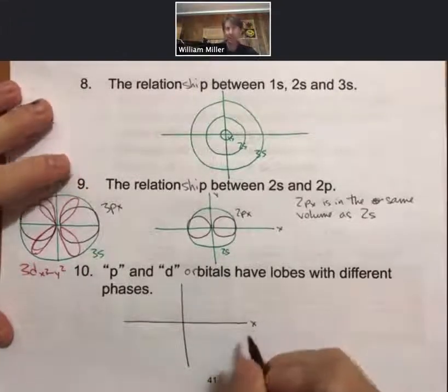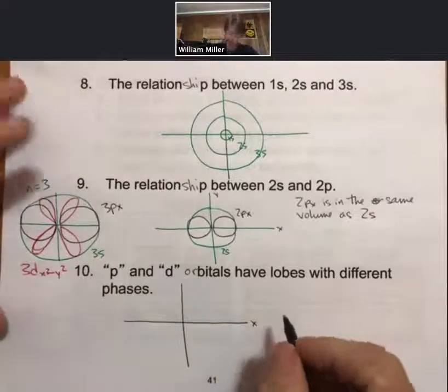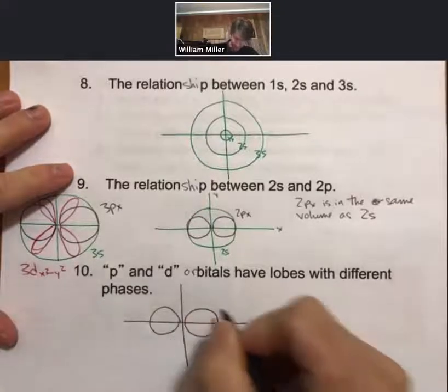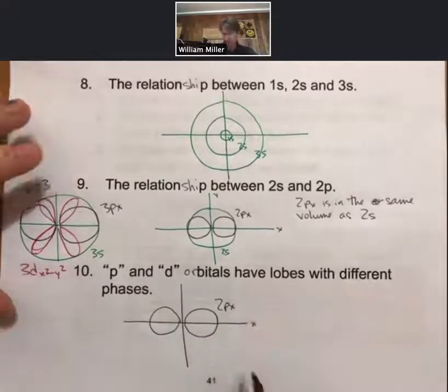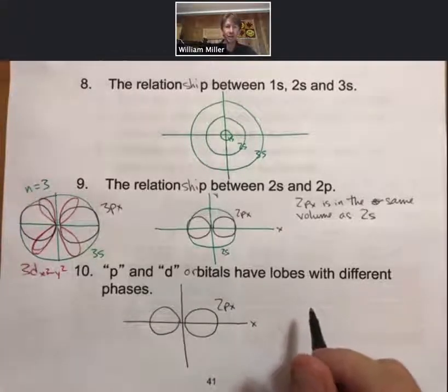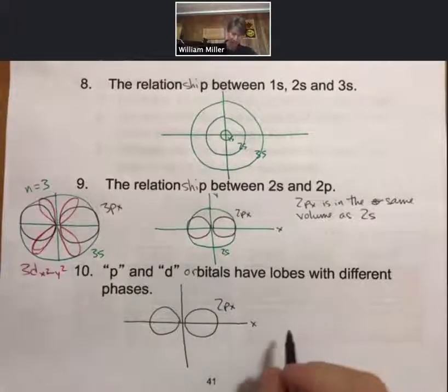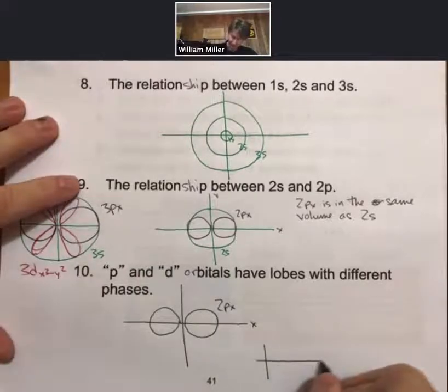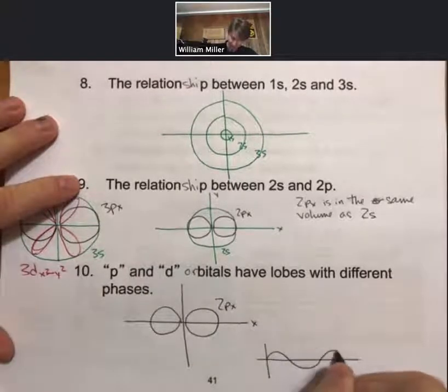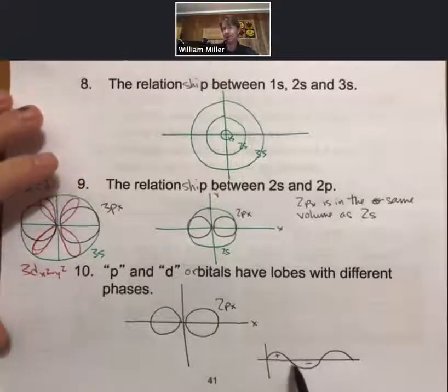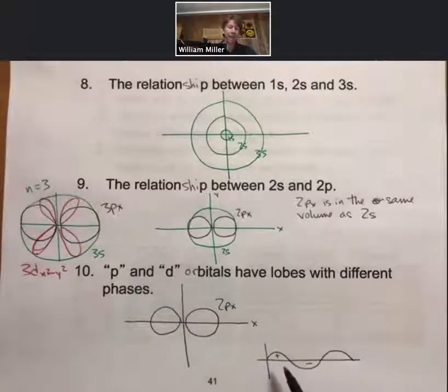So we'll draw on the x-axis—we'll draw, let's just say, 2px. And because these are based on wave functions, and waves have both positive and negative places, let me just draw a wave. Waves have positive and negative spaces in them, and that's just a handy way to keep track of the top and bottom of a wave.